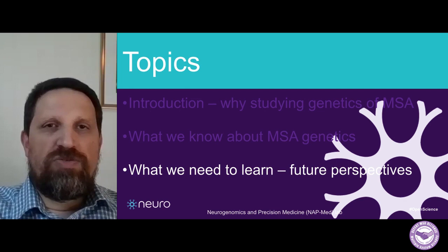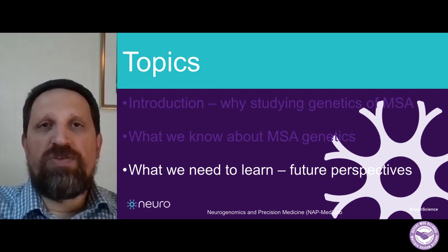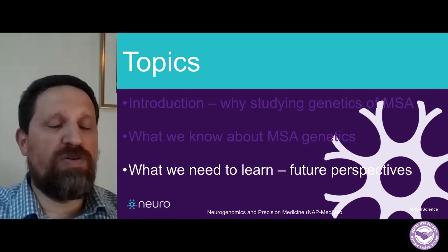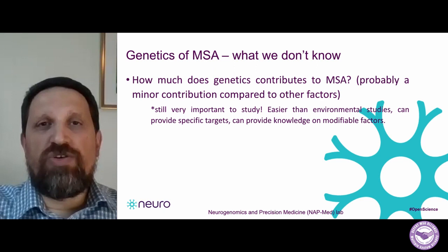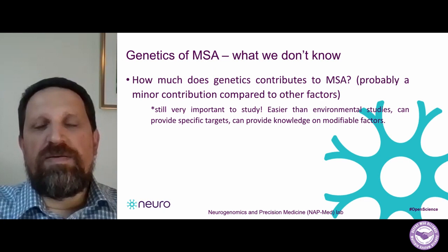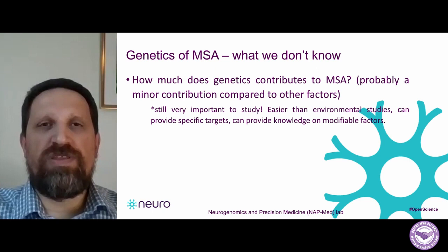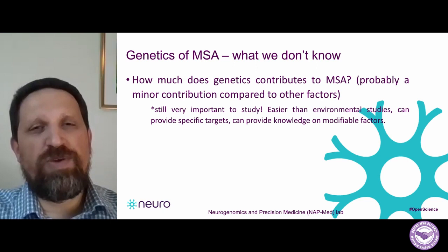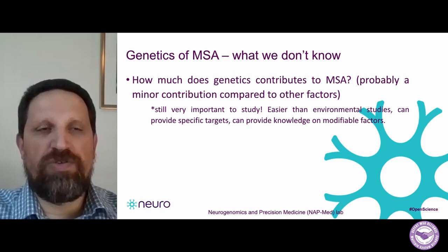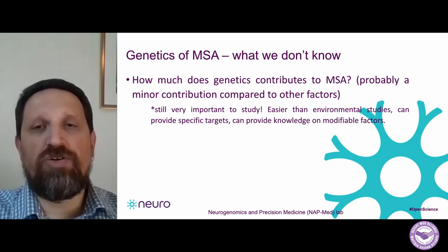To conclude, we will talk about what we need to do to learn more about the genetics of MSA and what we're doing in my own lab. We don't know how much genes actually contribute to MSA in terms of heritability. If we look at Parkinson's disease and dementia with Lewy bodies, we know heritability is relatively low — around 30% for PD and 10 to 15% for DLB. We assume it will be similar in MSA, although we don't have good information about that.